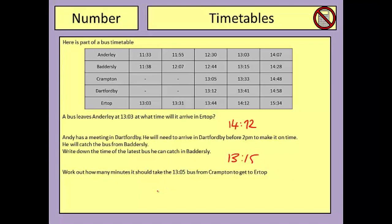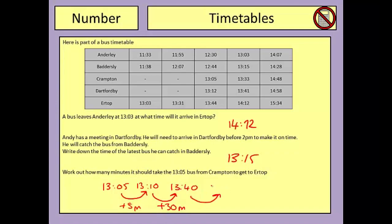The 13.05 bus from Crampton arrives into Ertop at 13.44. Starting at 13.05, I'll add on 5 minutes to reach 13.10 — easier for adding 10-minute blocks. From 13.10 I jump to 13.40 by adding 30 minutes. Then I add 4 more minutes to reach 13.44. Adding up all increments: 5 plus 30 plus 4 gives a total of 39 minutes to get from Crampton to Ertop.